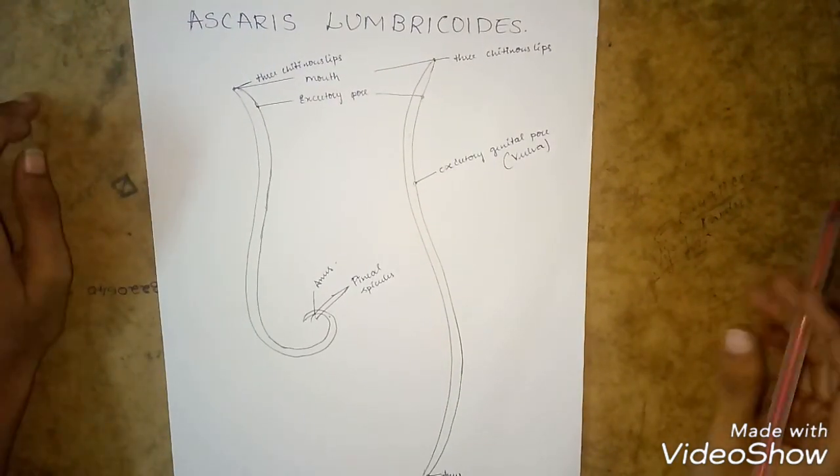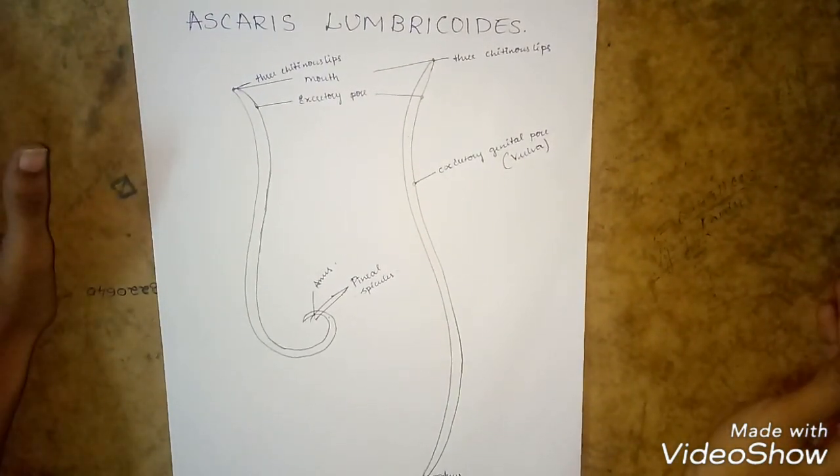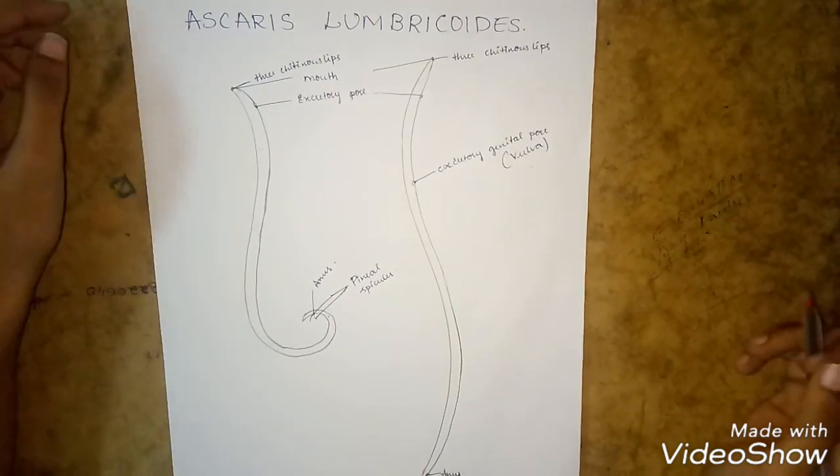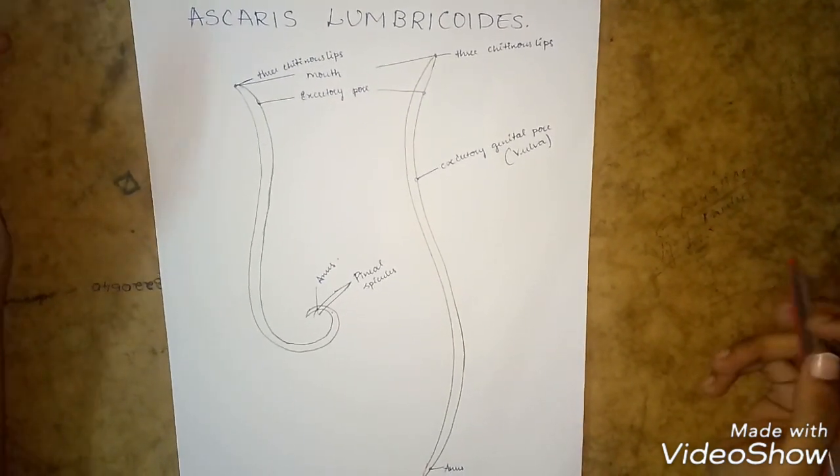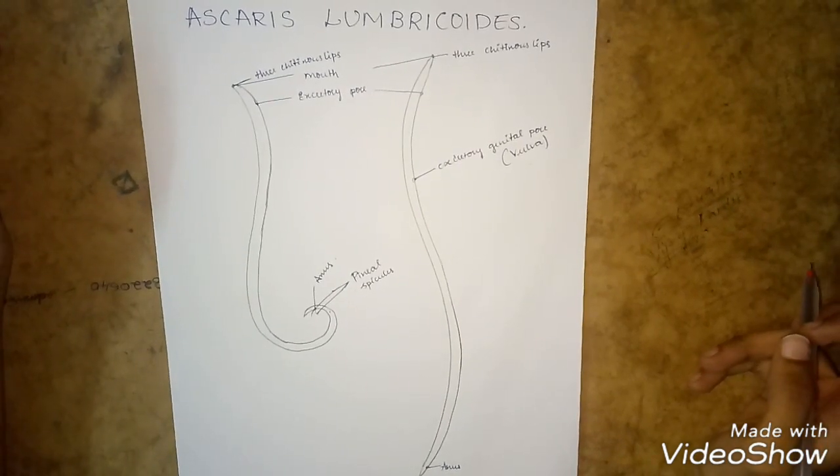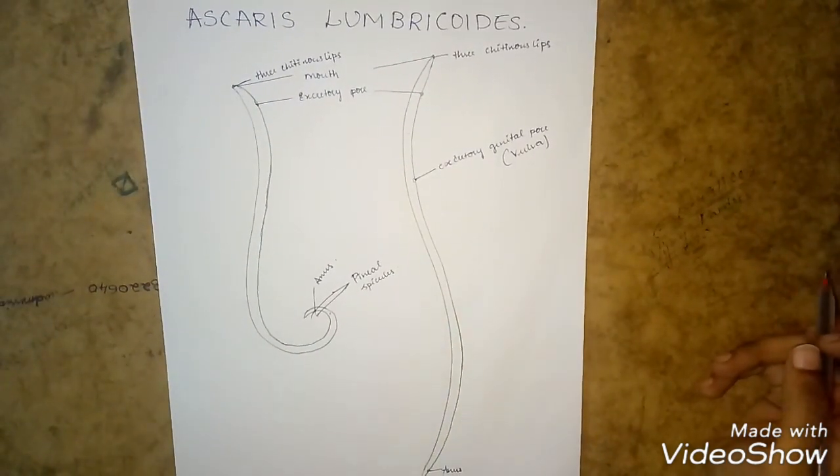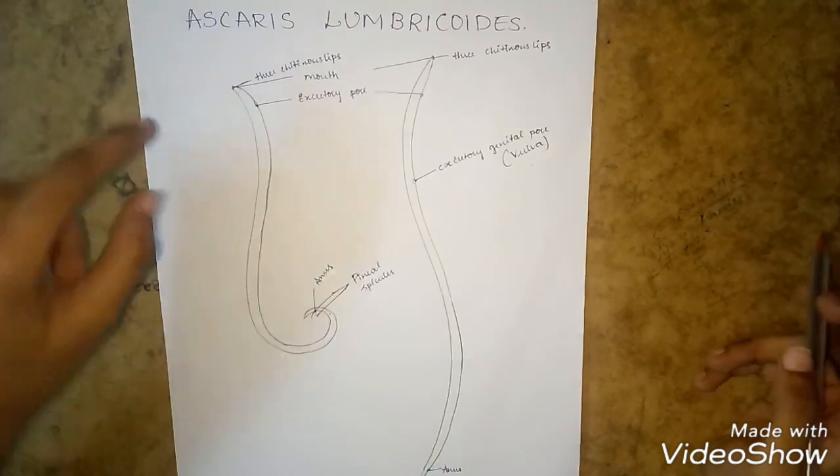In Ascaris, the sexes are separated and sexual dimorphism is distinct. In both males and females, the body is elongated and cylindrical. The mouth is present at the extreme anterior end and is surrounded by three chitinous lips.